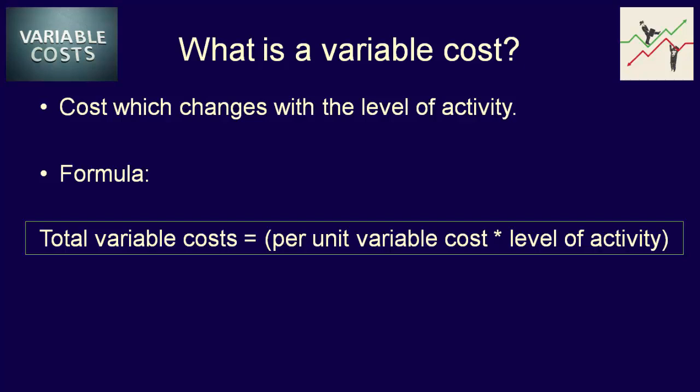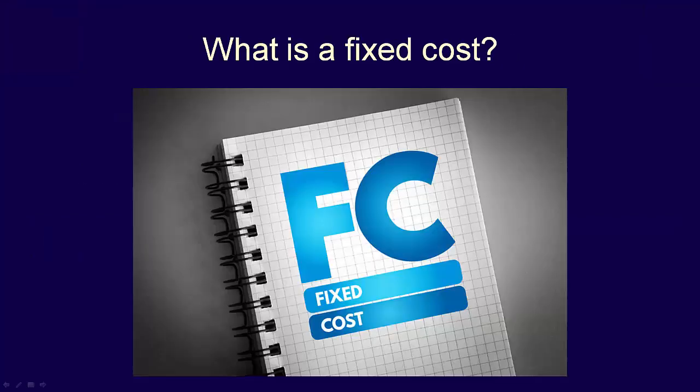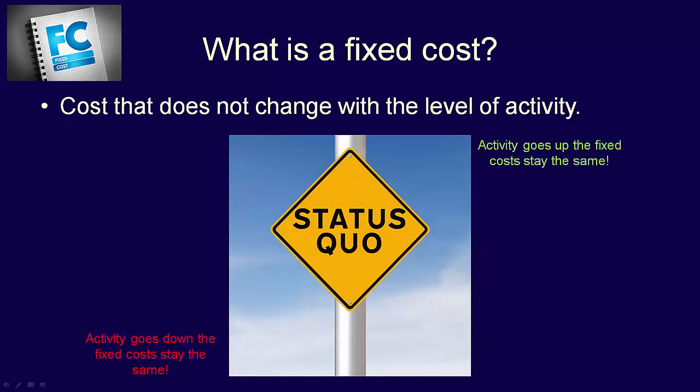Now that we understand variable costs, what then is a fixed cost? A fixed cost is a cost that does not change with the level of activity. Total fixed costs stay the same when the level of activity goes up or when it goes down.